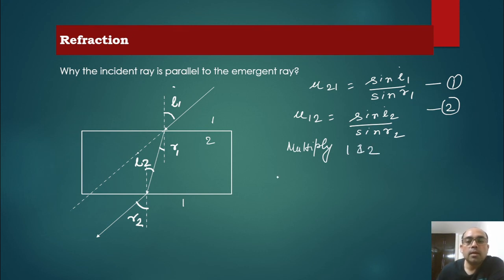What do we get in left hand side? We get refractive index of 2 with respect to 1 into refractive index of 1 with respect to 2 is equal to sine i1 divided by sine r1 into sine i2 by sine r2.